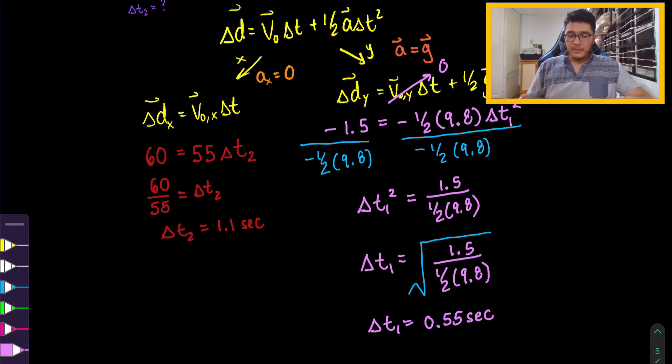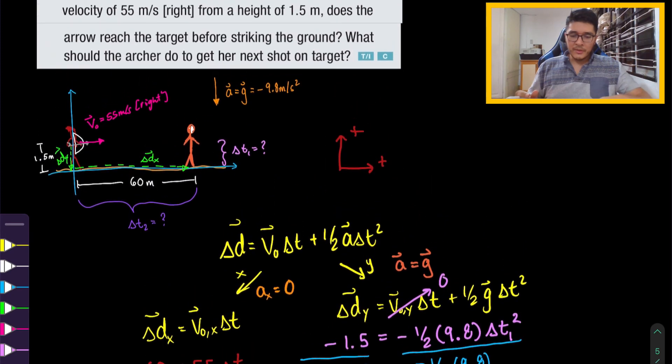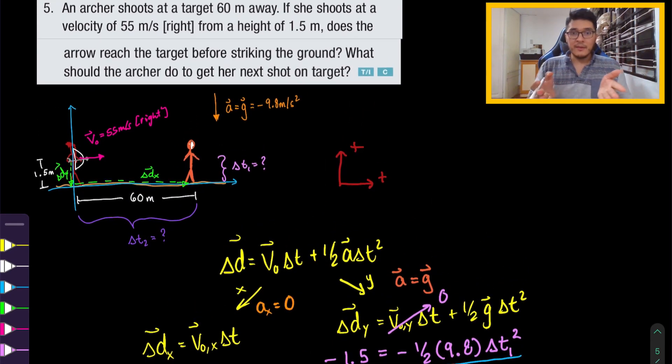So what does this mean? The time interval that it takes to travel 60 meters is 1.1 seconds. The time interval to fall 1.5 meters is 0.55. So this means that the target was not hit. In other words, the arrow falls before it hits the target. So if we go back to the question, the question was already hinting that, but then they wanted us to verify it. But there's a second part. What should the archer do to get her next shot on the target?